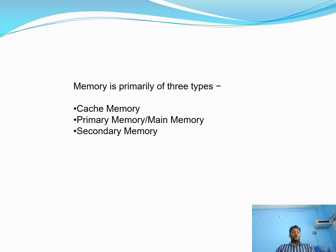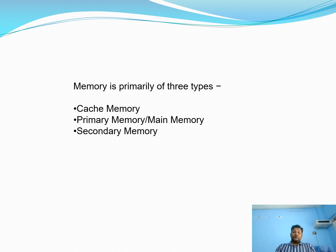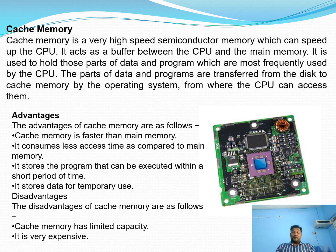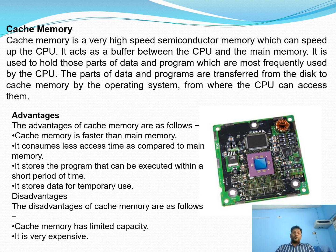There are only three types of memory: cache memory, primary memory (also called main memory), and secondary memory (also called external memory). Cache memory is a very high speed semiconductor memory which can speed up the CPU. It acts as a buffer between the CPU and main memory. It is used to hold those parts of data and programs which are most frequently used by the CPU, transferred from disk to cache memory by the operating system.